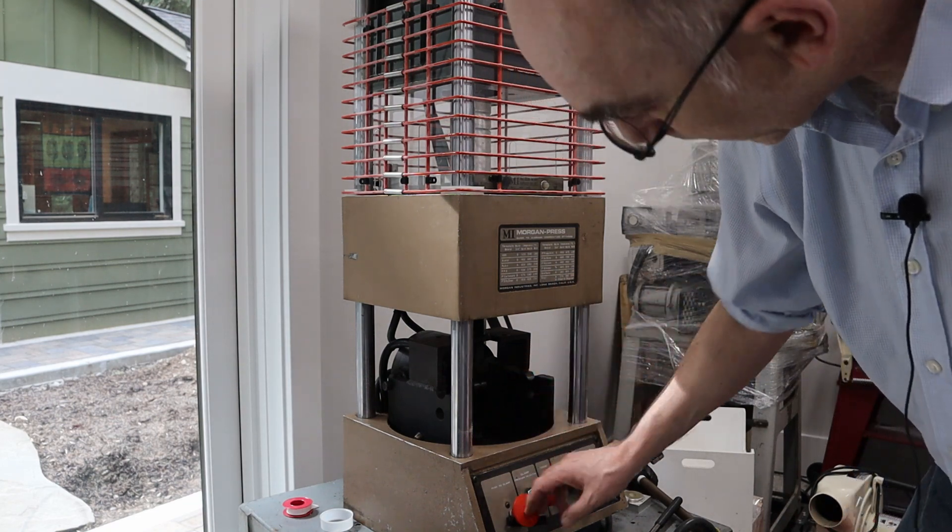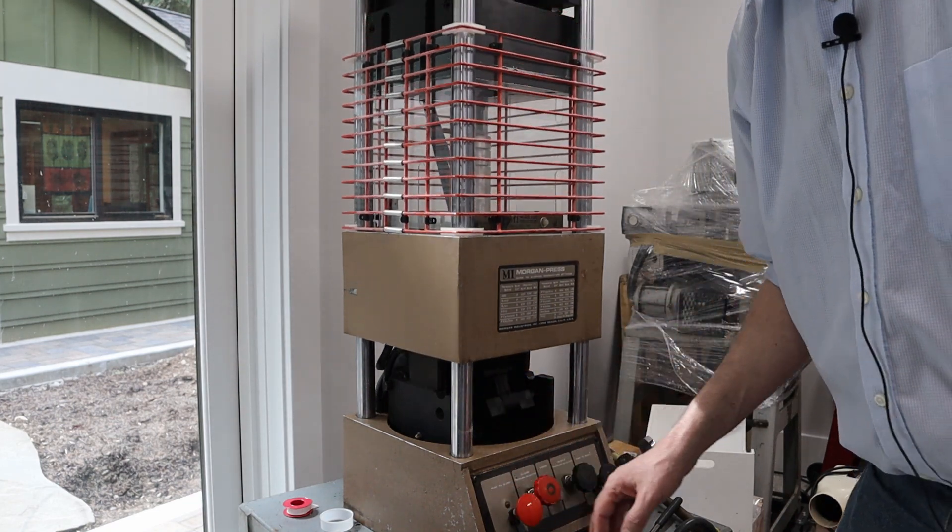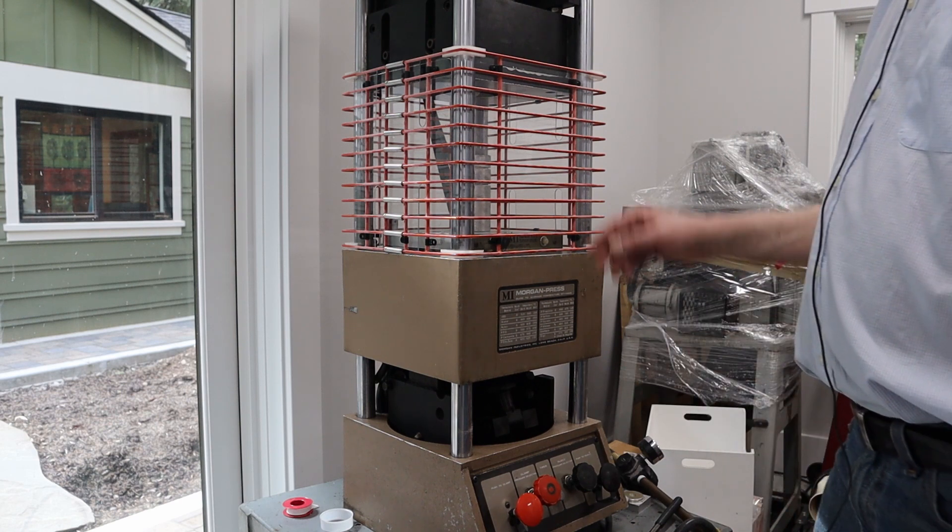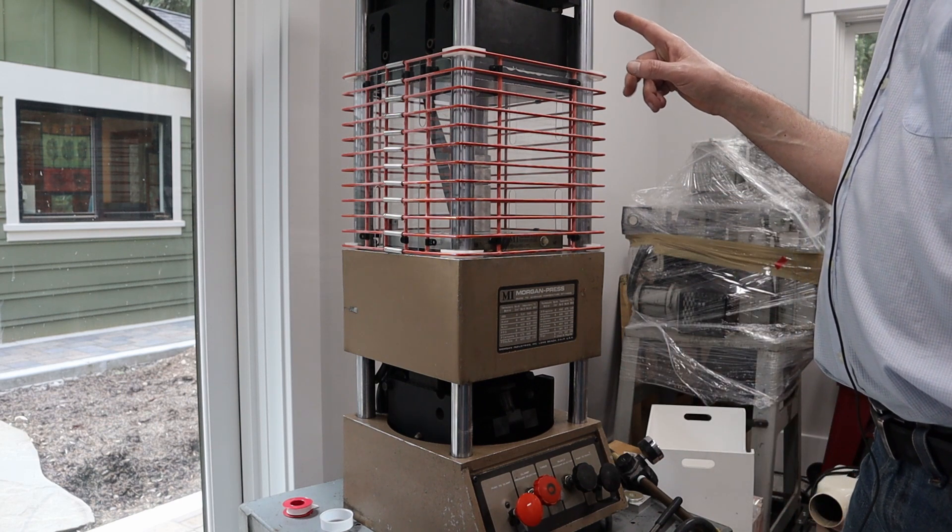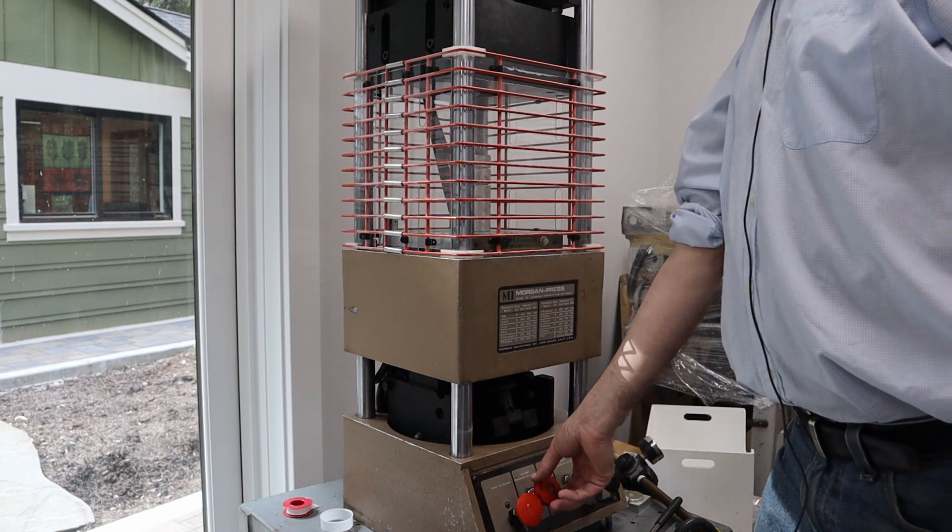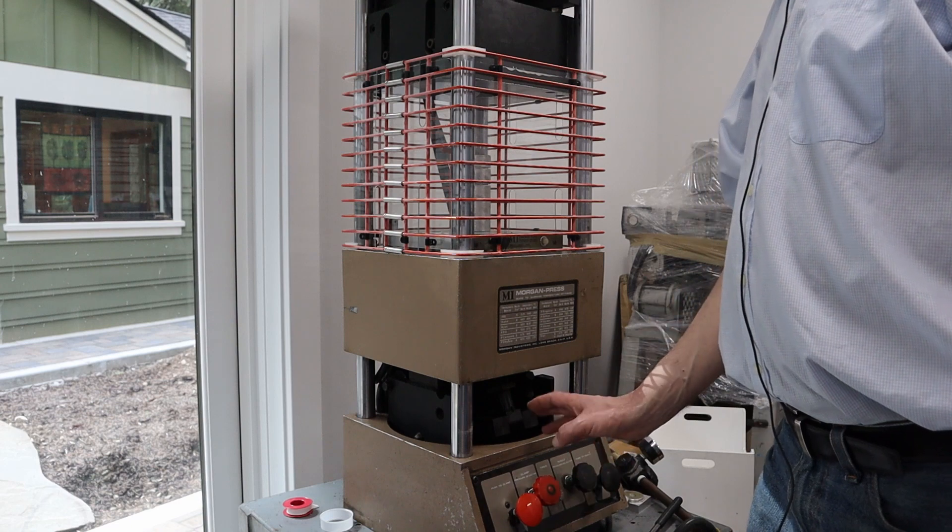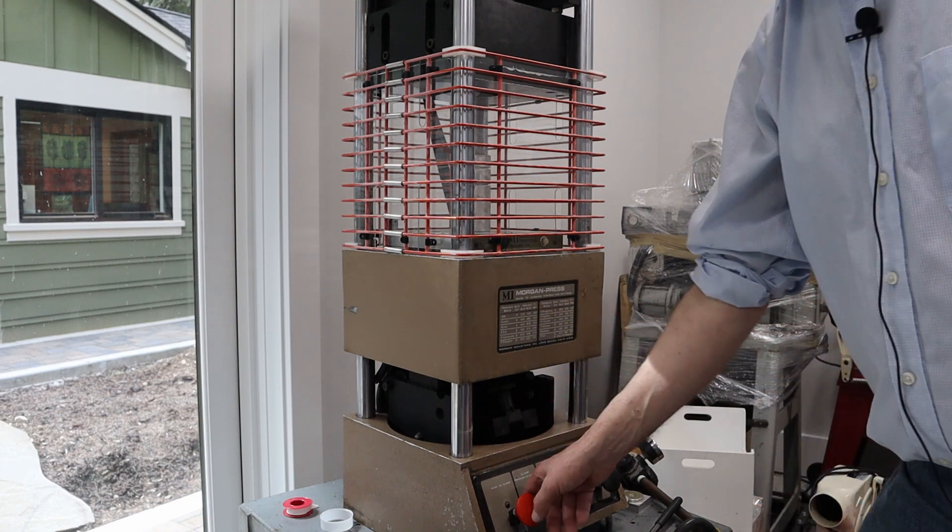Now the next thing is that this toggle clamp is not toggling all the way. So what I'm going to do is increase the toggle clamp force a little bit. Right now it's less than two. So I'm going to set it to about three. Try it again.